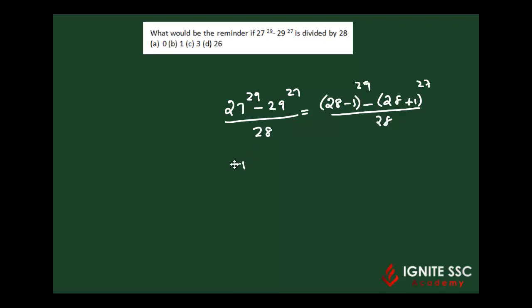So we're left with (-1)^29 minus (1)^27 divided by 28.